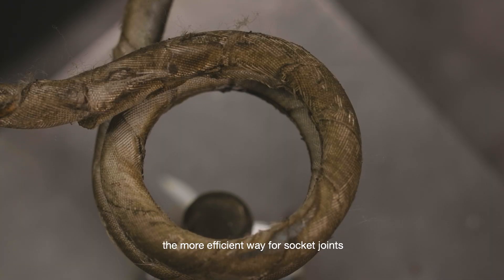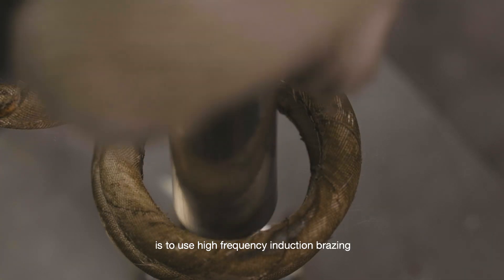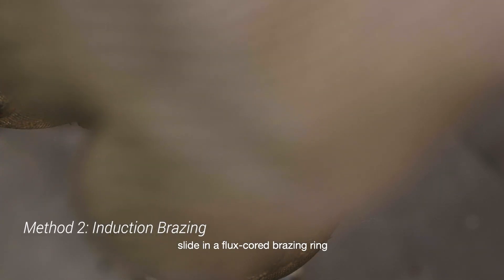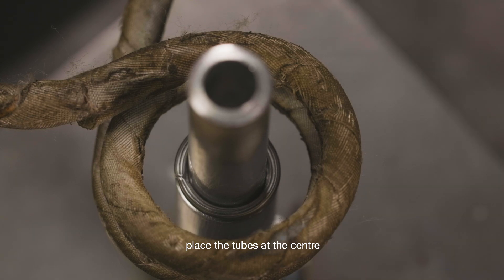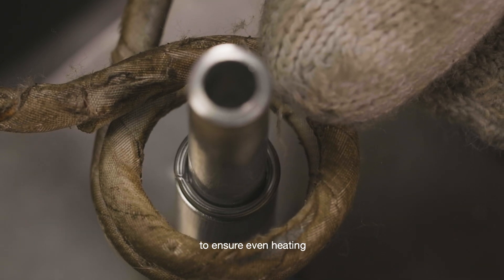The more efficient way for socket joints is to use high-frequency induction brazing. Slide in a flux-cored brazing ring of compatible size. Place the tubes at the center of the induction coils to ensure even heating.